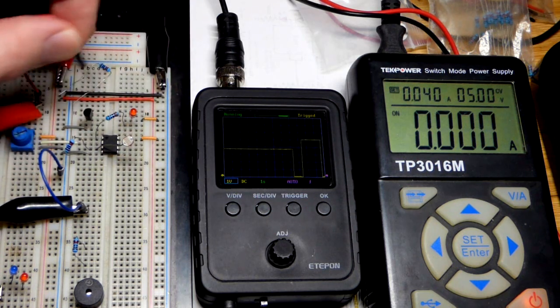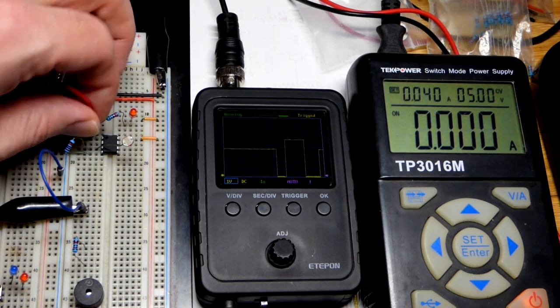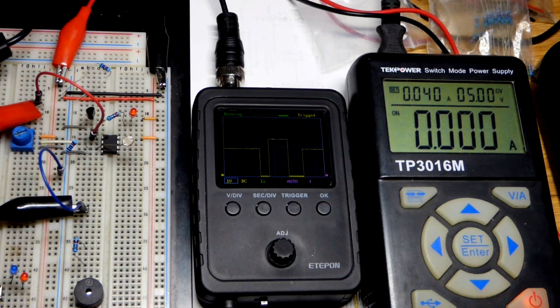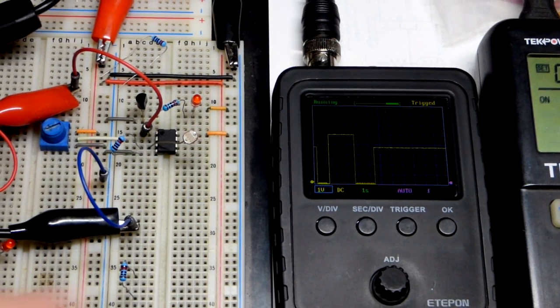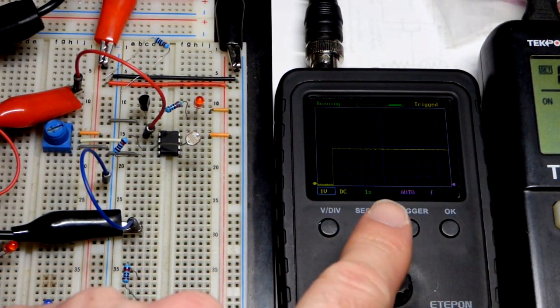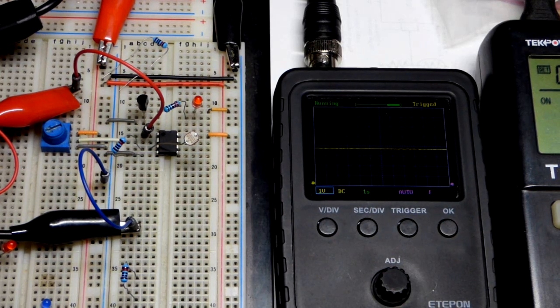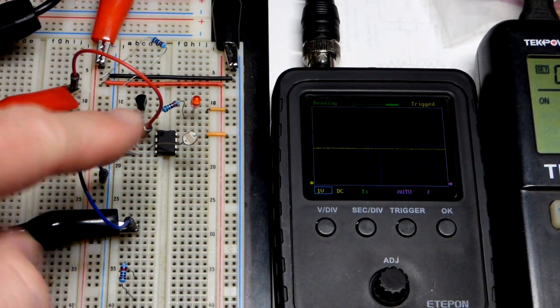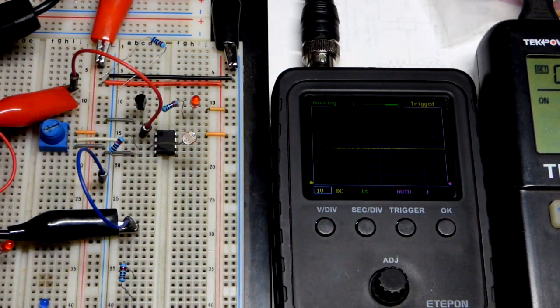So it never goes all the way to the positive supply no matter what—that's because it's a single supply op amp. You need a rail-to-rail op amp to go from five volts all the way down to zero volts if you're using a five volt power supply. But again with those, usually you can't provide current or it throws it off.